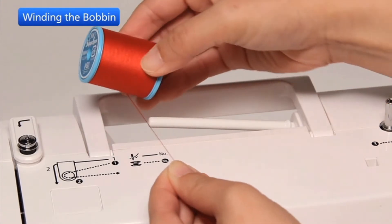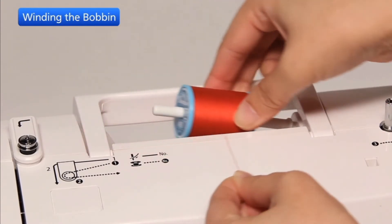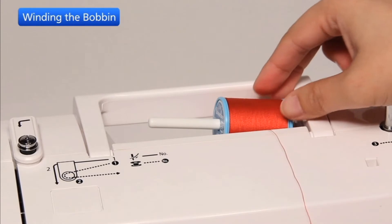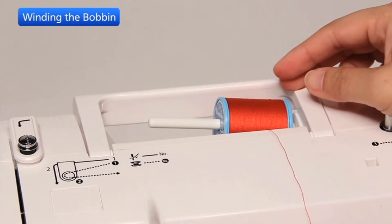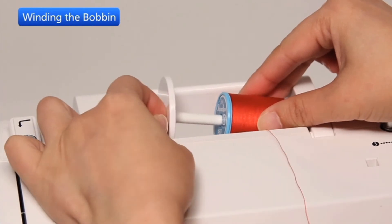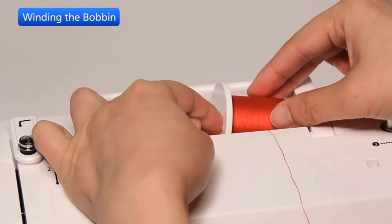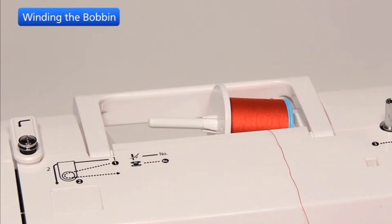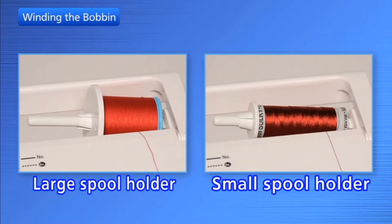Lift up the spool pin. Place a spool of thread on the spool pin. Attach the large spool holder and press it firmly against the spool of thread so that the spool rests on the supporter. The small spool holder is used with narrow or small spools of thread.